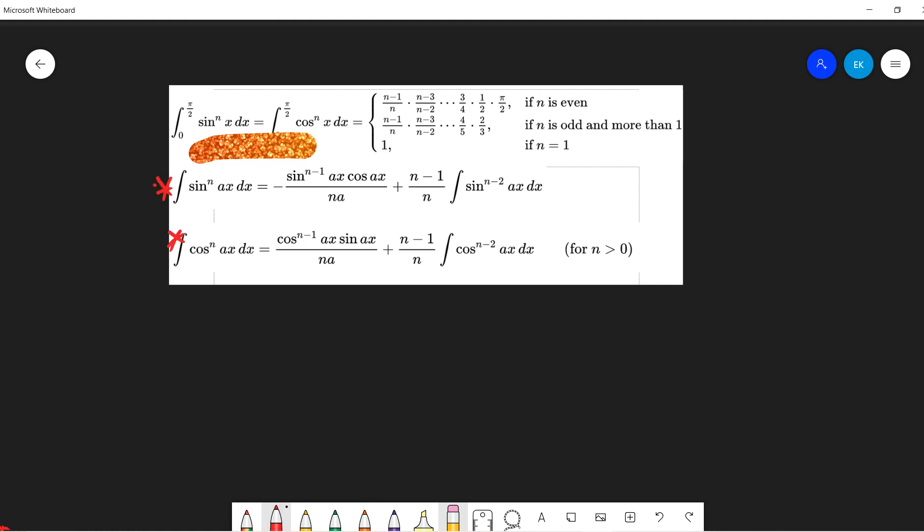Okay, so this is our goal. The first thing I want to prove is that this one equals the cosine one. The proof is very simple: just let x equal pi over 2 minus y.